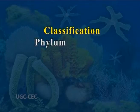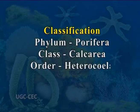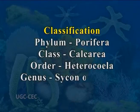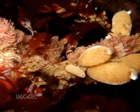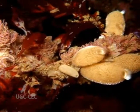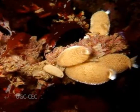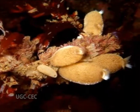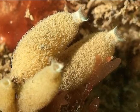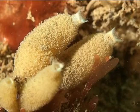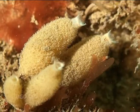Sycon (or Scypha): Classification — Phylum: Porifera, Class: Calcarea, Order: Heterocela, Genus: Sycon or Syca. External features: Scypha, formerly called Sycon or Grantia, is a solitary or colonial marine sponge found attached to rocks in shallow waters. These are found in abundance near North Atlantic shores. The body of the sponge is covered externally by a thin dermal epithelium or ectoderm, and the surface of the sponge appears smooth to the naked eye.